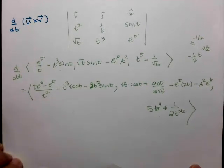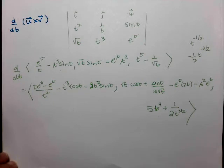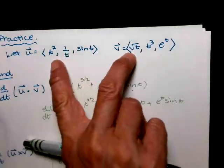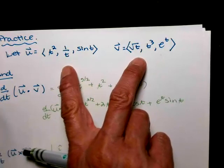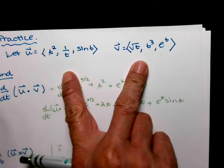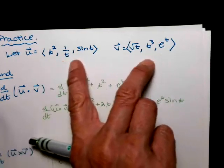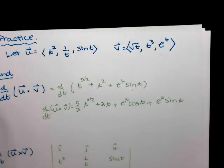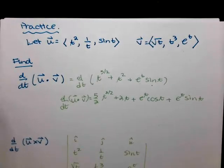We could get the exact same result using the cross product rule with u cross v prime plus u prime cross v. If one of your vectors had constants in it, its derivative would introduce zeros, making the cross product much nicer. So if one of your vectors is full of constants, using the cross product rule would make the calculations easier.